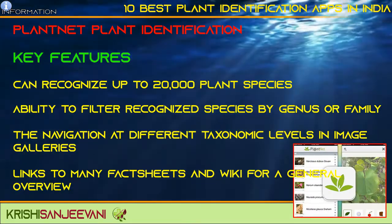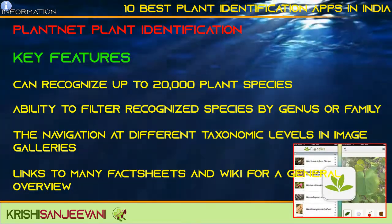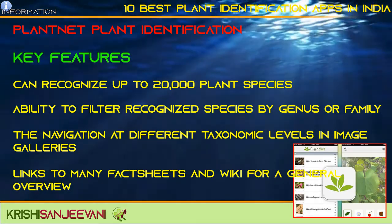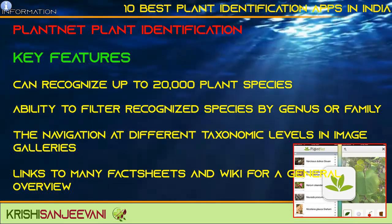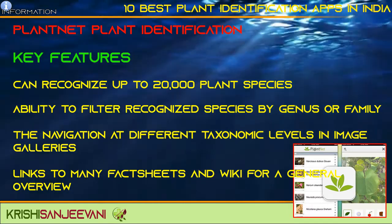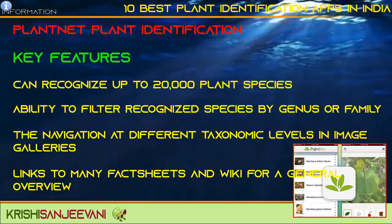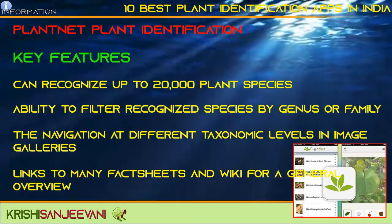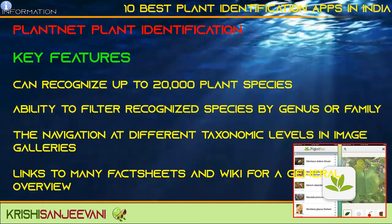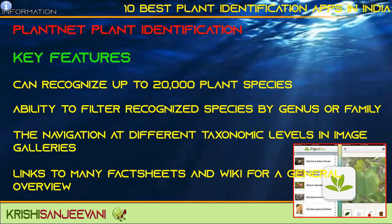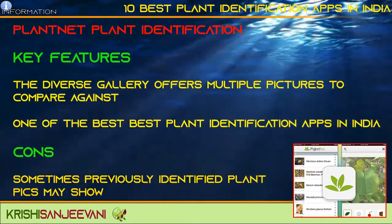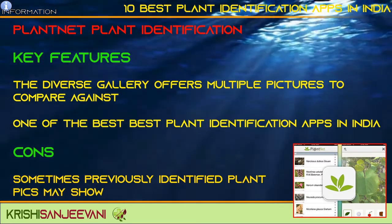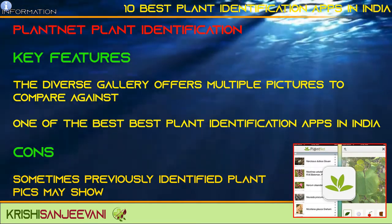Plant.net plant identification. Key features: can recognize up to 20,000 plant species, ability to filter recognized species by genus or family, navigation at different taxonomic levels in image galleries, and links to many fact sheets and wikis for a general overview. The diverse gallery offers multiple pictures to compare — one of the best plant identification apps in India.